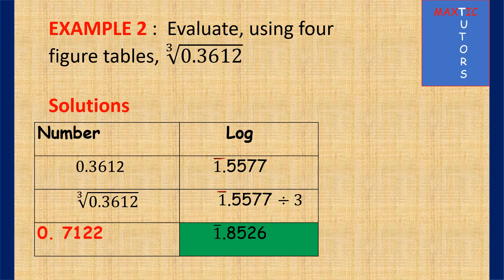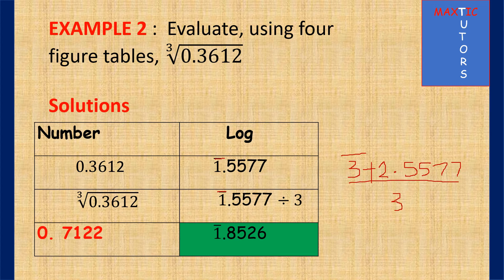How do you go about this? This is 3, so what are the multiples of 3? 3, 6 and 9. So it means that the first multiple of 3 that is greater than 1 is 3. So your bar 1.5577 will now be replaced with bar 3 plus 2.5577, then everything divided by 3. So 3 can go in 3, that is 1, so you have bar 1.